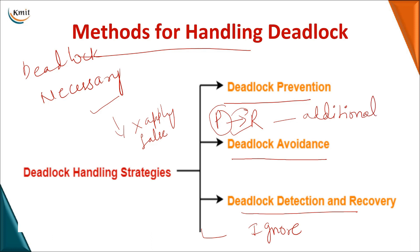In deadlock detection and recovery, since you may not be able to overcome the deadlock through prevention or avoidance, a deadlock might still occur. Once a deadlock occurs, you try to detect it and then take recovery measures. As an analogy: after you get a fever, you take medicines.